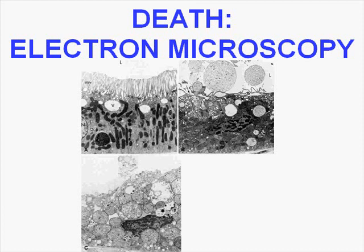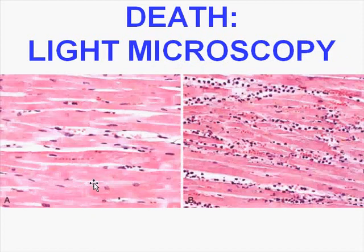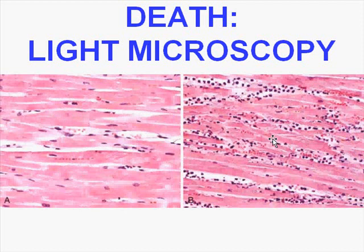At the light microscopy level, consider a normal myocardium — you can see nuclei and capillaries. One of the first changes seen at death is loss of nuclei. Once that tissue is dead, it acts as a trigger for acute inflammation, resulting in infiltration of neutrophils and further loss of nuclei. These are very early changes, though not quite as early as what you might see on electron microscopy.